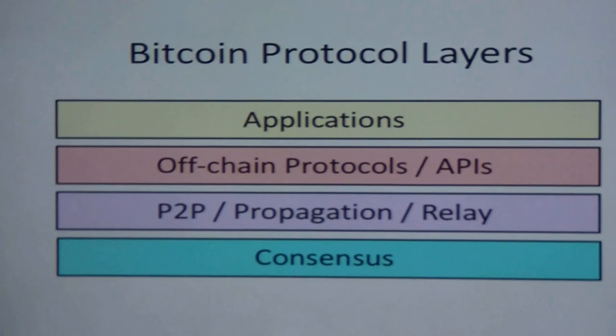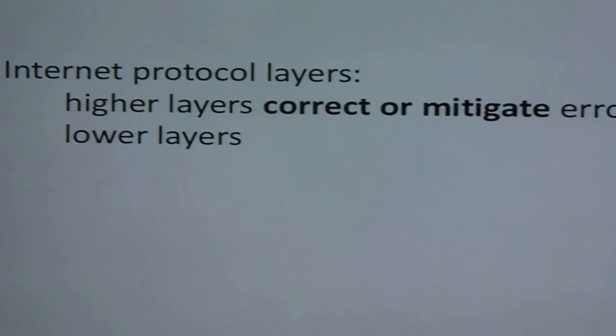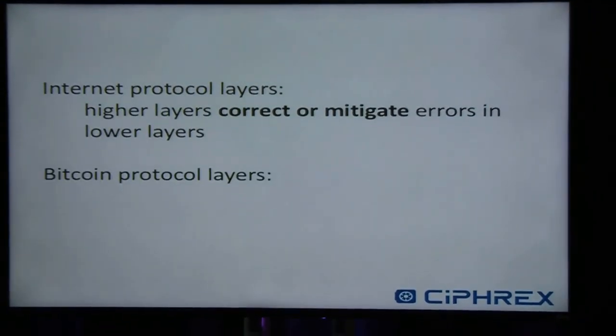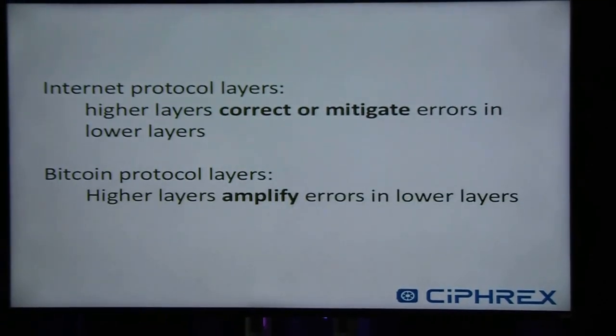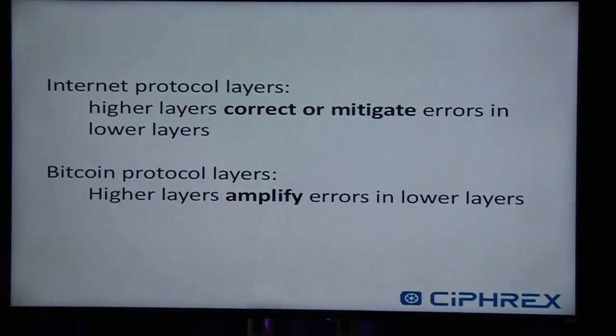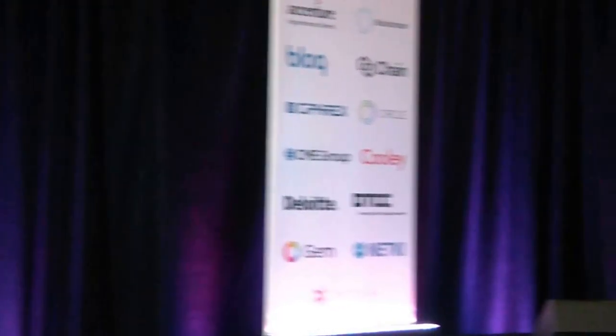There's a really big difference between the way the internet works and the way Bitcoin works, which is a little problematic. In the case of the internet, higher layers correct or mitigate errors in the lower layers. But in the case of Bitcoin, higher layers actually amplify the errors in the lower layers. So there's very little tolerance for error — if there's any error in the consensus layer, by the time it gets to applications, applications have already diverged. They don't agree, they can't send each other anything, they don't understand each other.